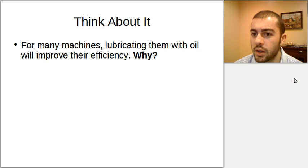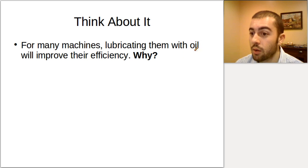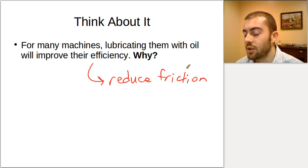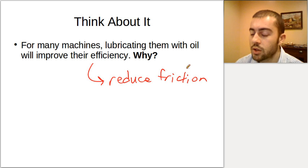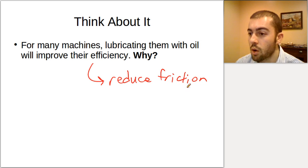The last thing to consider: lubricating machines with oil improves their efficiency. Think about why, given what we said about friction. The answer is that oil reduces friction. When you put oil in your car, it lubricates the engine so the parts rub together more smoothly and are less affected by friction. The same goes for a bike chain. By reducing friction, less work is stolen from what you put in, and you end up with a higher efficiency percentage.